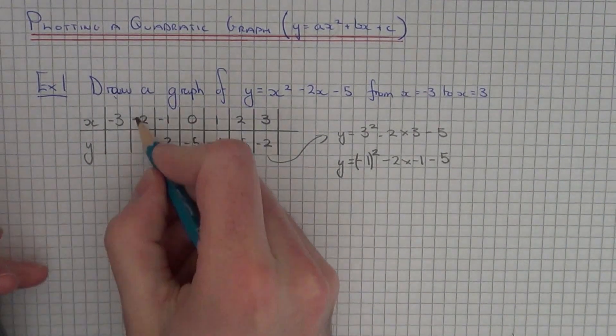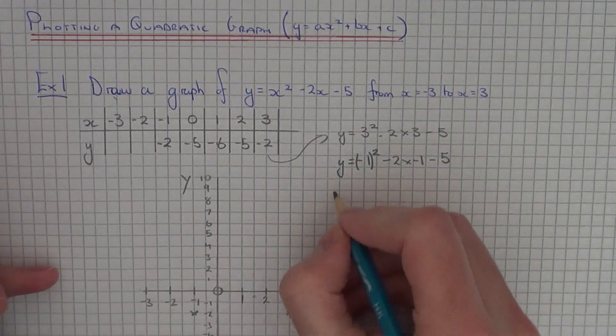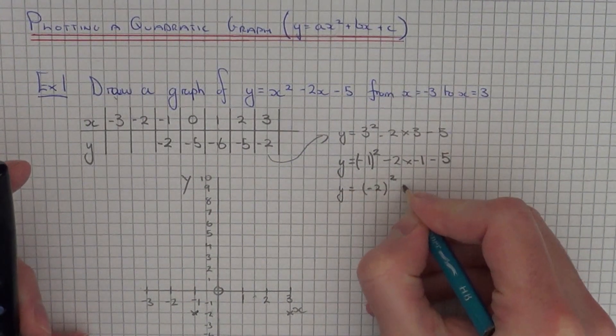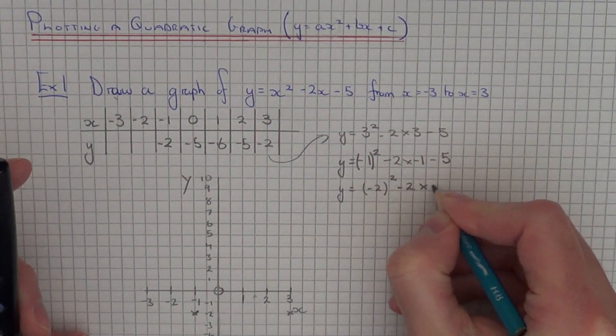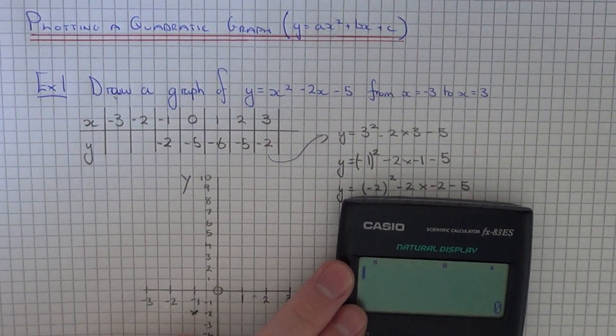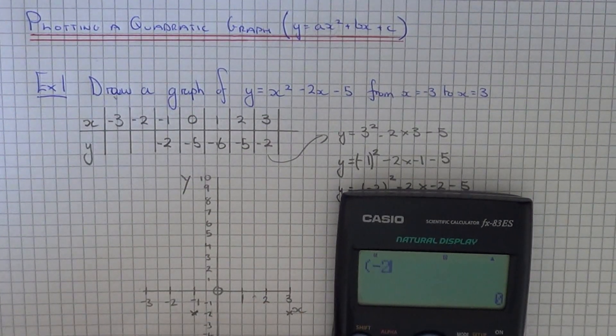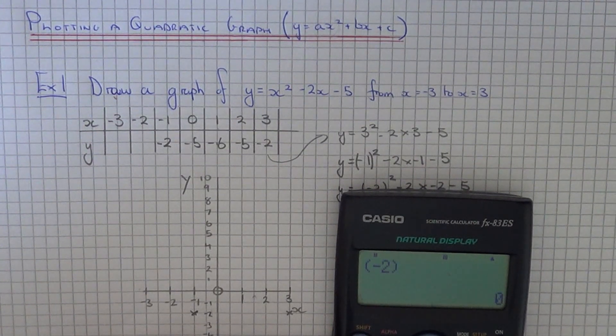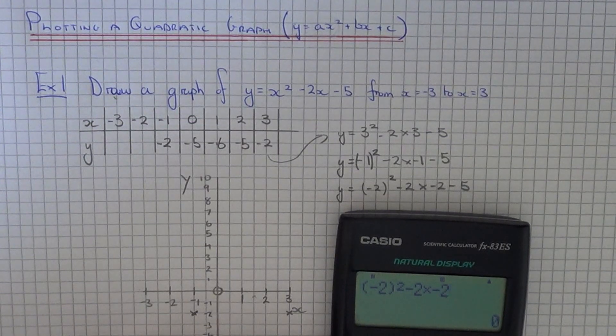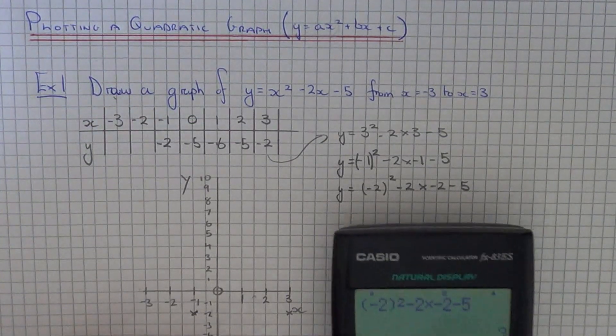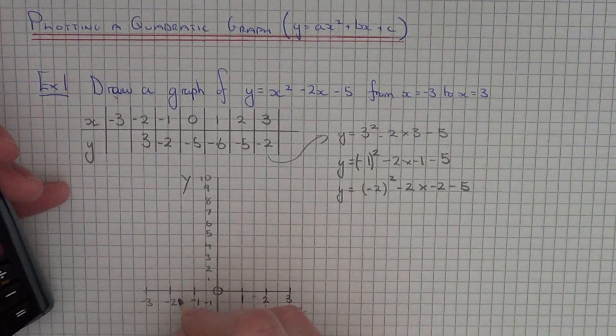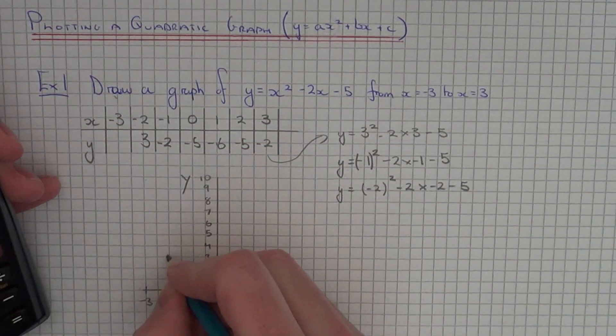So next we've got x equals minus 2. So when you substitute it in make sure you put the minus 2 in a bracket when you square it otherwise it won't work. So if we type it in like that, so get the bracket around the negative number. So we've got x equals minus 2. So your next coordinate is 3. So it's minus 2, 3 to plot.